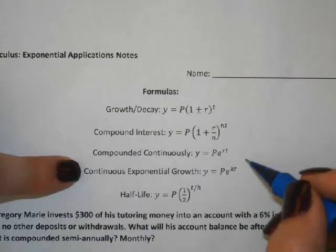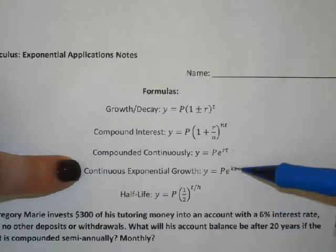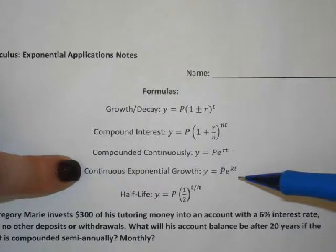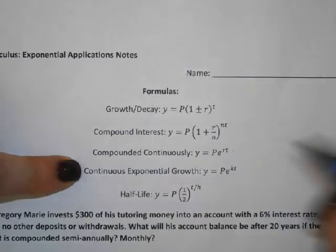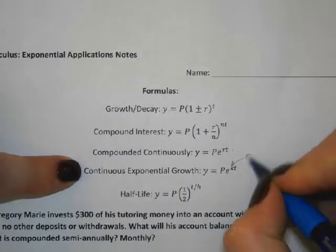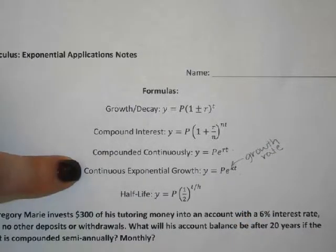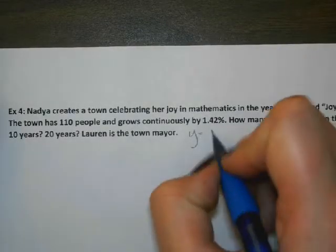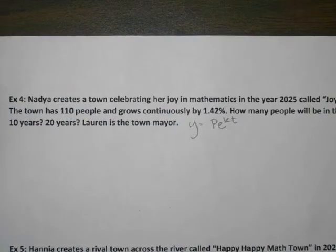Now, before you flip this over, what you'll notice is that these two formulas are very similar. The K value here, even though it's a different variable, it still represents the rate. So the K value is the growth rate. If you need to add that to your notes, feel free. So on the notes, I'm going to say Y equals PE to the KT. The K value and the R value are the same. Both are growth rate.